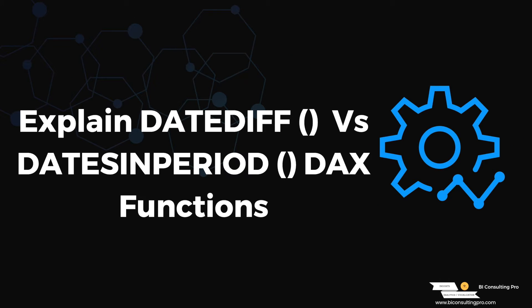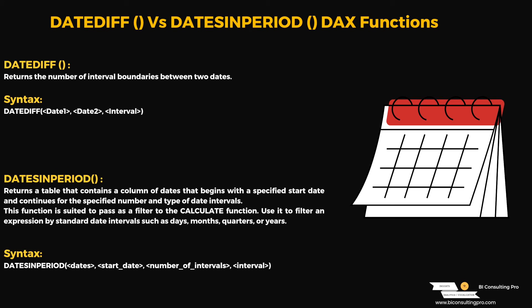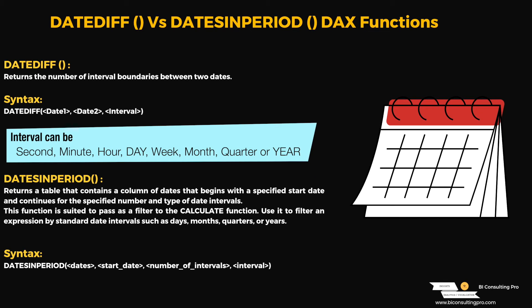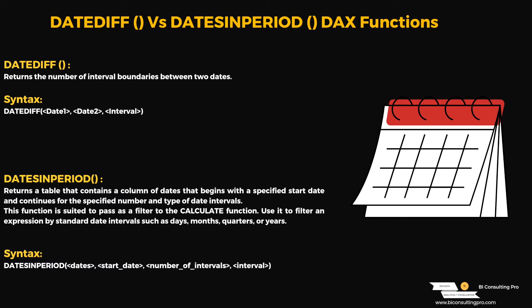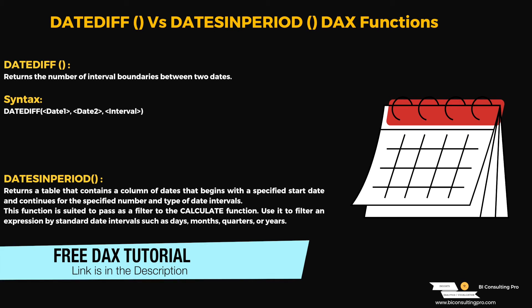My interviewer then asked me to explain the DATESDIFF versus DATESINPERIOD DAX functions — another very important one. DATESDIFF returns the number of interval boundaries between two dates; you simply specify the first date, second date, and the interval. On the other hand, DATESINPERIOD returns a table containing a column of dates that begins with a specified start date and continues for a specific number of date intervals.